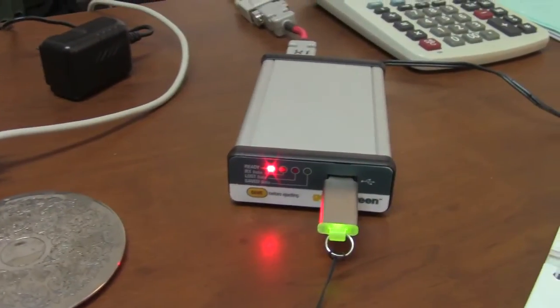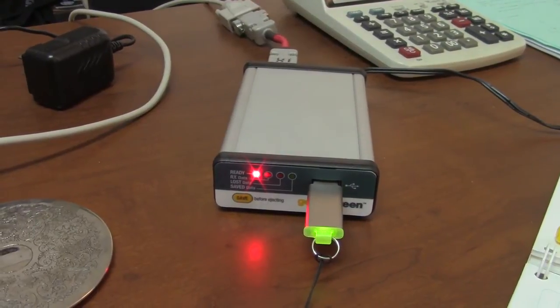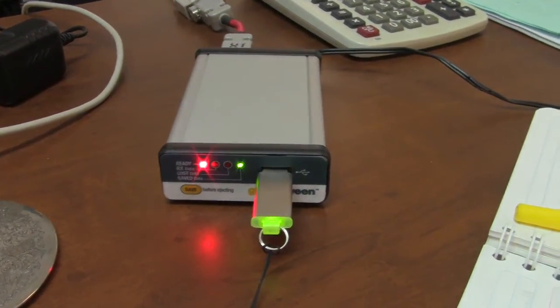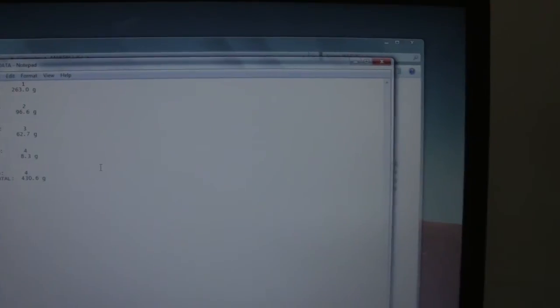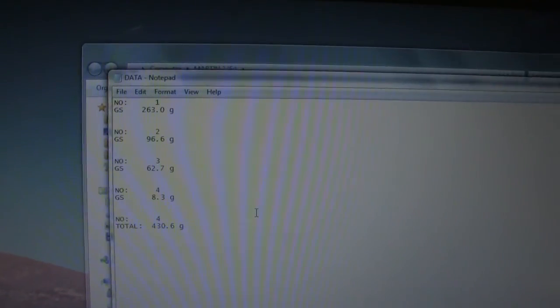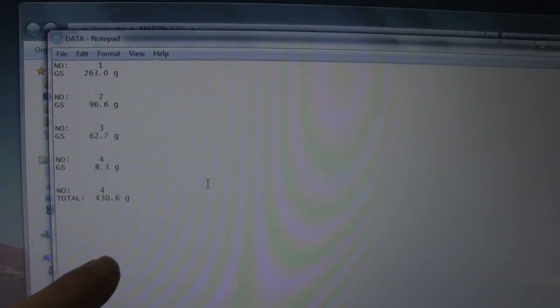We are going to do a print of the total of the four. We will wait until the green light and take out the USB. There we can see the text file where the weight measurements were made and the total.